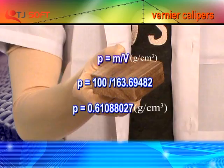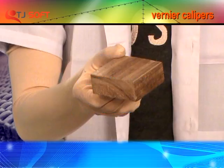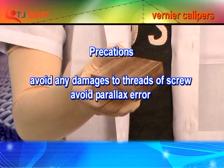The density of the regular body can then be determined. Precautions: Avoid any damage to the threads of the screw of the Vernier Calipers. Avoid parallax error.